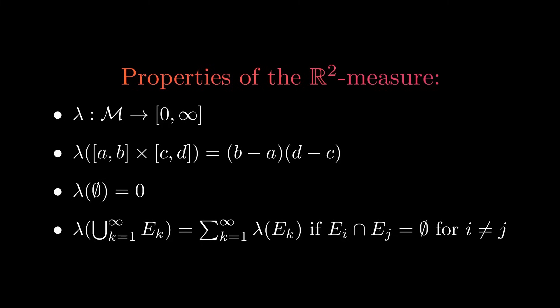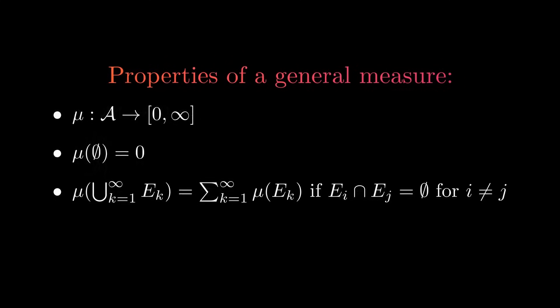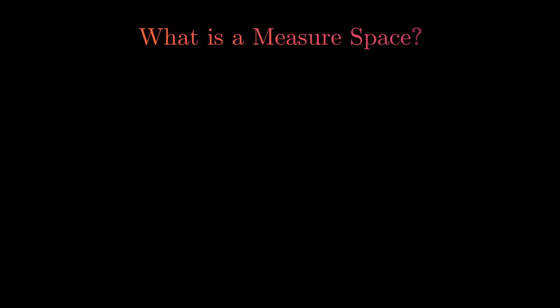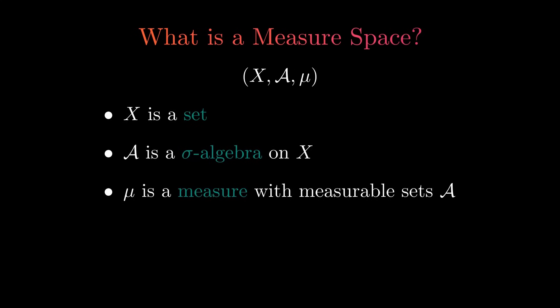All of the properties we have observed follow from this. The only property we cannot easily generalize is what area rectangles should have, as in other spaces there might not be anything we can call a rectangle. Thus, without this property, we obtain the properties a general measure should have. With all these observations in mind, we are ready to define a measure space. A measure space consists of three objects: X can be any set, A is a sigma algebra on X which is the collection of all measurable sets, and μ is a measure with the properties we have just formulated.